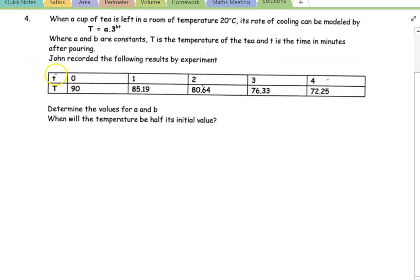Alright, so we've got a bunch of values here: time 0 is 90, time 1 is 85 point something, time 2 is 80, etc. And the question is, determine the values for A and B, and when will the temperature be half its initial value?